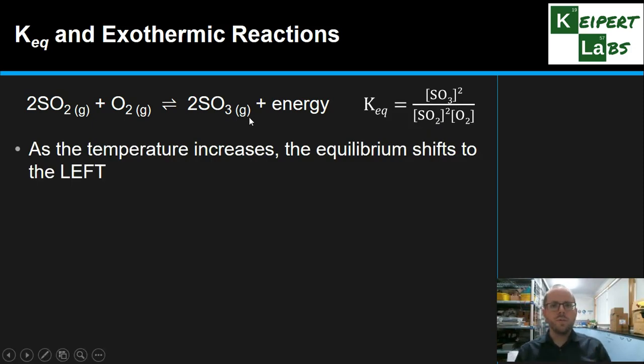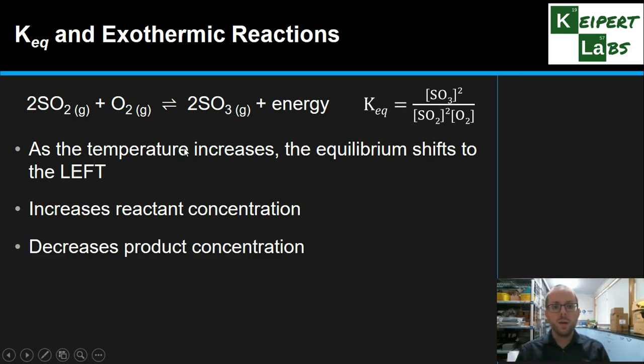So, let's say we increase the temperature of the system. We know from Le Chatelier's principle that increasing the temperature is going to cause us to shift to the left. We're going to be using up, we're trying to remove that added energy. So, this energy term has all of a sudden increased. We're going to shift to the left to use it up. Two things happen as a result of that. Firstly, we increase the reactant concentration. We have more SO2 and O2. Along with that, we also have less of the product concentration. We have less SO3.